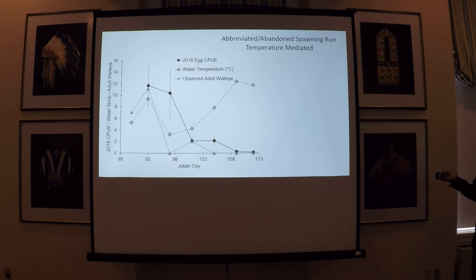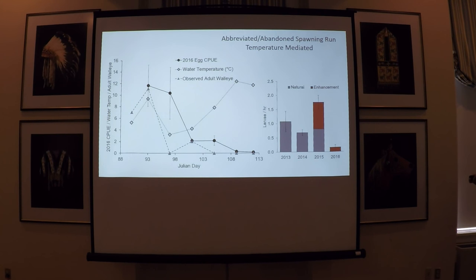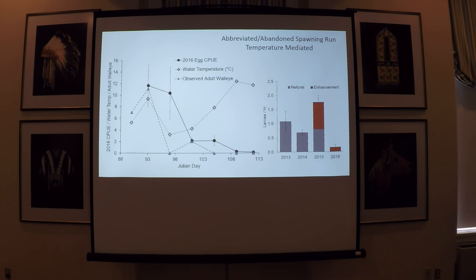The ultimate question is whether the enhancement site is actually benefiting reproduction for walleye, and this is where monitoring data becomes important. Looking at catch rates of larval walleye from 2013 and 2014 before the enhancement structure was installed, in 2015 the contribution of larvae from the enhancement site nearly doubles the total catch rate compared to what was seen previously. And even in 2016 with low catches, nearly all of the larvae caught came from the enhancement site, suggesting it provides a buffer and compensates for poor reproduction at that location.